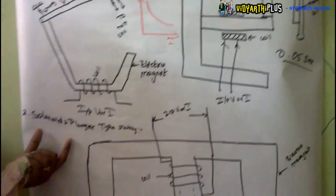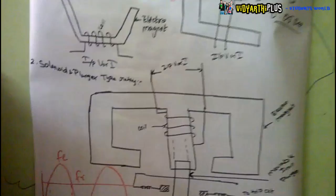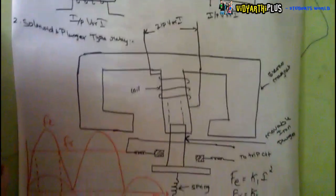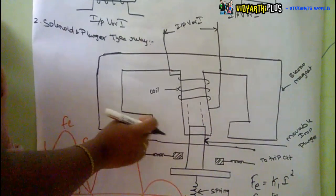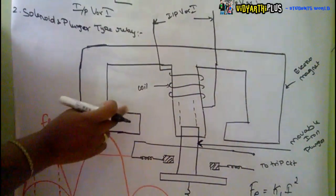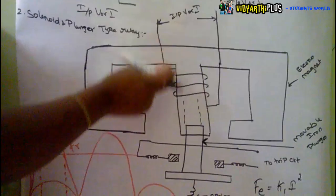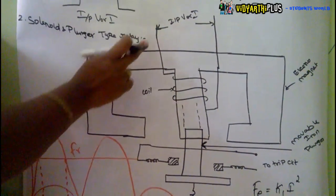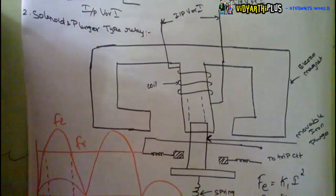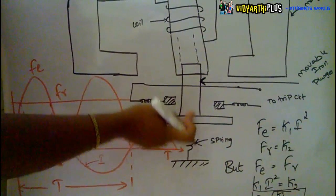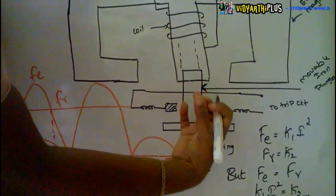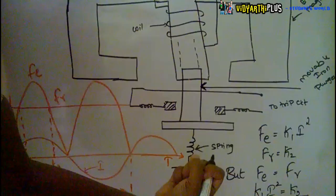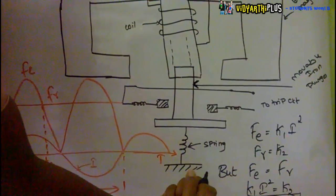The next type is the Solenoid Plunger Type Relay. It consists of an electromagnet of E-type shape, energized by means of a voltage or current. There is a spring connected to a plunger. Under normal conditions, the spring exerts a restraining force and holds the plunger down.